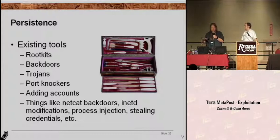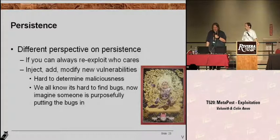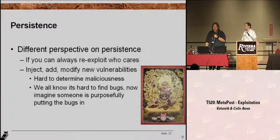I'm a big advocate of cleanup. I've seen a lot of pen testers leave 100 different tools on the target — this gets you caught, makes forensics really easy. So leave no trace. So we have a couple of different perspectives on persistence. If you can always re-exploit the target, then why worry about it? What we really prefer to do is inject, add, or modify new vulnerabilities into a target. It's really hard to determine maliciousness when the system just has a bug and they're not aware of it. If they discover the bug, it's not like discovering a rootkit.